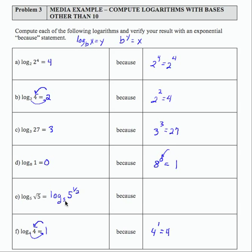What's the power on 5 that gives me 5 to the 1 half? That would be 5 to the 1 half equals 5 to the 1 half. So the power is 1 half. Therefore, log base 5 of 5 to the 1 half equals 1 half because this 5 raised to this power equals this result.